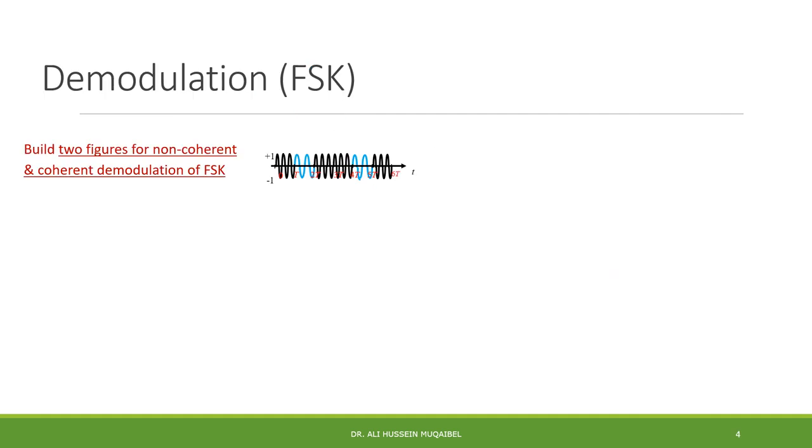Now, for the demodulation of FSK, we'd like you to build two possibilities, two figures for non-coherent and coherent demodulation of FSK. How can you tell, if somebody gives you the following sequence, how can you build a circuit that can tell that we have one or zero? Suppose you know that high frequency means one, for example, and low frequency means zero. What can you do? Non-coherent means we want to build a circuit that does not require local carrier generation. And the second one is the coherent requires local generation. So, you can pause the video and you can think about yourself about how to build this. If you can, that will reflect good understanding.